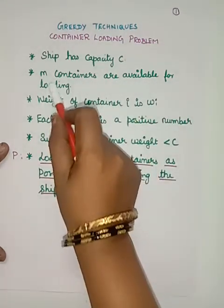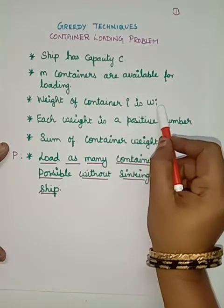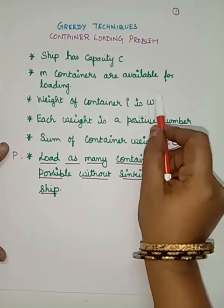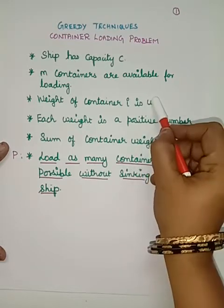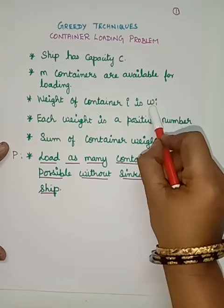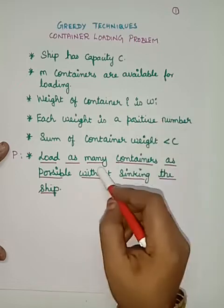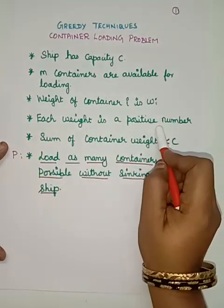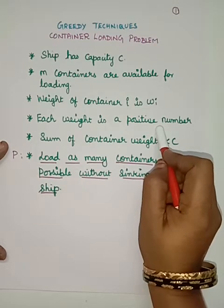The weight of every container is denoted as Wi, where Wi is the weight of the i-th container. W1 is the weight of the first container, W2 is the weight of the second container, and so on. Each weight must be a positive number — it should not be zero or less than zero.